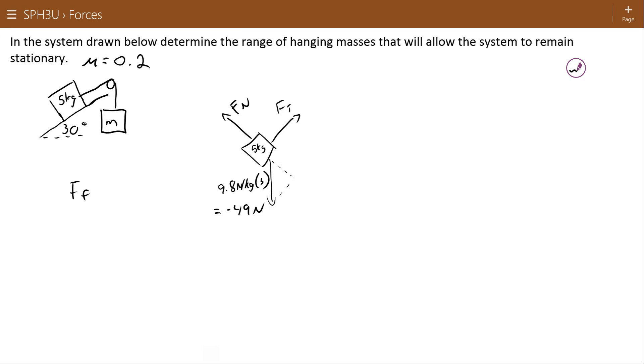But the question here is does the force of friction pull up to keep the 5 kilogram object from sliding down, or does it go the other way to keep the object from moving up the incline? The answer is that's why we have a range of hanging masses. The force of friction can be in either direction, and the range of masses in between those two directions will allow this system to remain stationary.